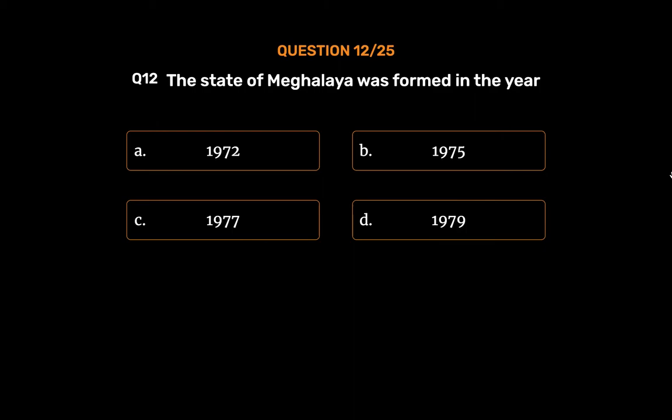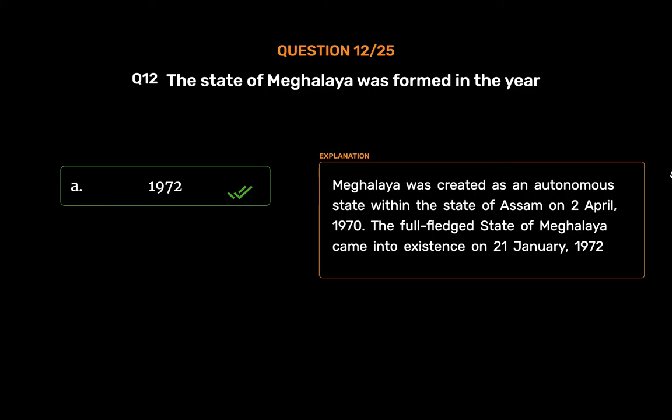The correct answer is Option A: 1972. The state of Meghalaya was created as an autonomous state within the state of Assam on 2nd April 1970. The full-fledged state of Meghalaya came into existence on 21st January 1972.